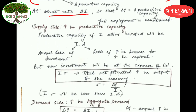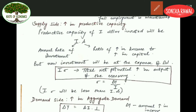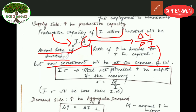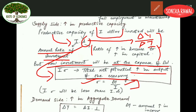On the supply side, Domar says that if you invest I dollars, the productive capacity will be I·s, where I is your annual rate of investment and s is the ratio of increase in income to increase in capital, that is ΔY/ΔI. However, s is not the right indicator, because new investment will be at the expense of old. To correct this, Domar gives I·σ, where σ represents the total net potential increase in output of the economy, and σ is now ΔY/I. This I·σ will definitely be less than I·s.